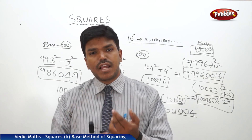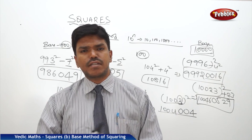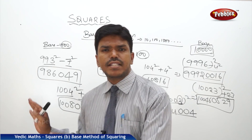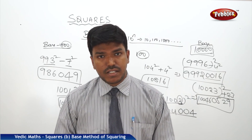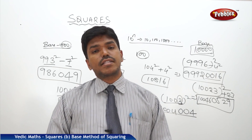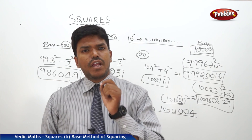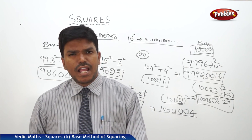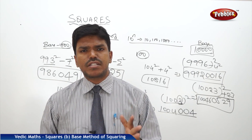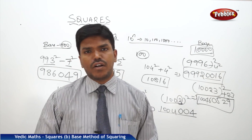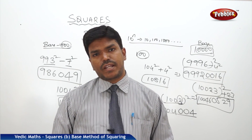Like this, we can easily calculate squares of numbers near to the base, whether it is base 10, 100, 1000, or 10,000 — it doesn't matter. Now let us see one more type of technique for squares, in which we can calculate any number's square — whether it is 3-digit, 4-digit, or 5-digit — within a single line. That technique is called the duplex method of squaring.